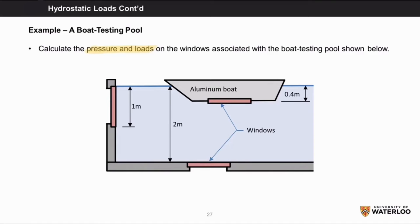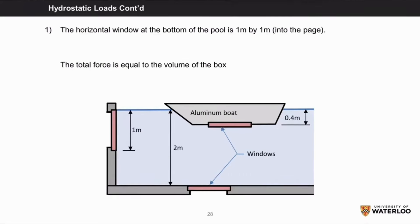The first one is at the bottom of the pool at a depth of 2 meters. The second one is located under the aluminum boat at a depth of 0.4 meters. And the last one is on the side of the pool, and we are told that it is a 1 meter tall window. Let's start off with the horizontal window at the bottom of the pool, which is 1 meter by 1 meter into the page.